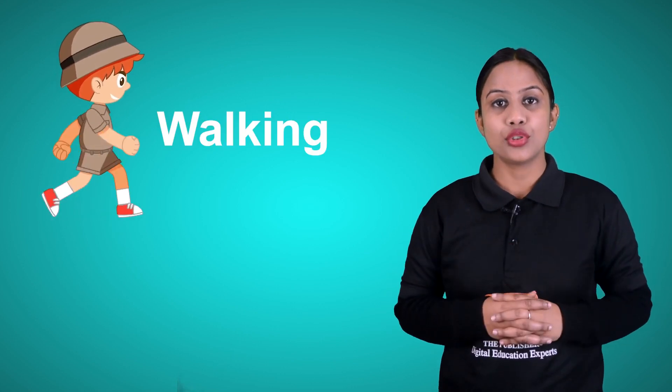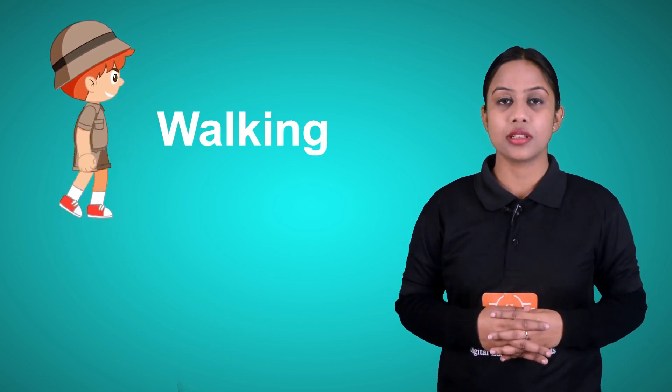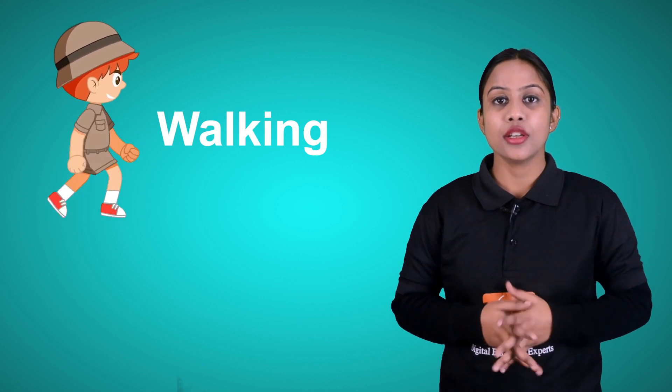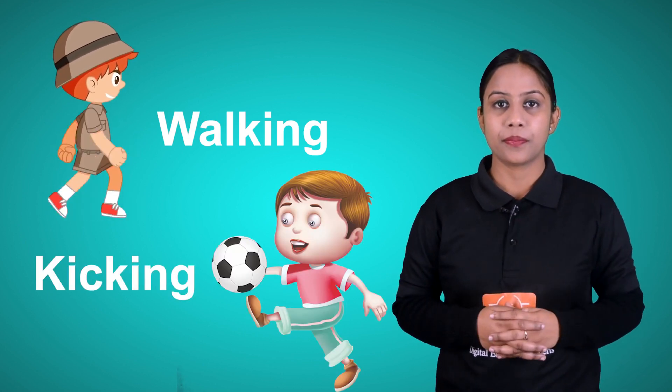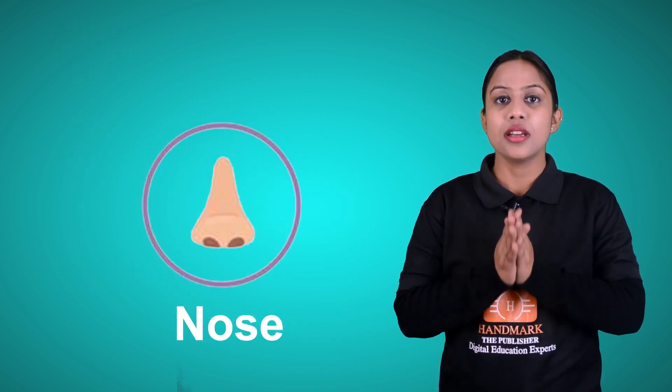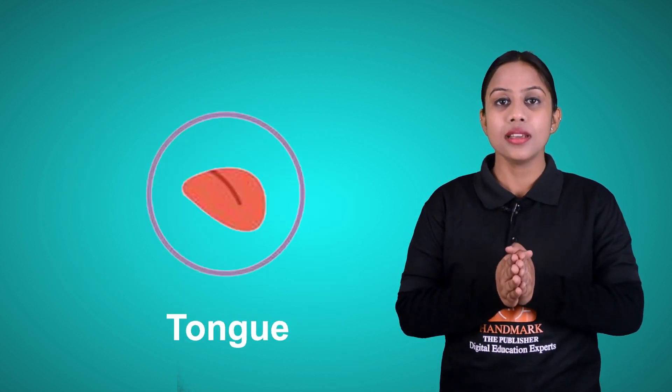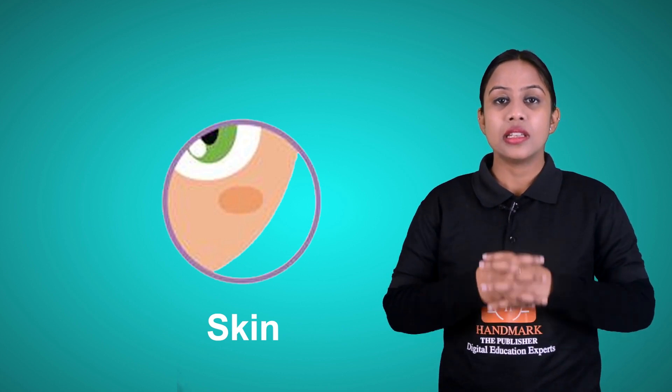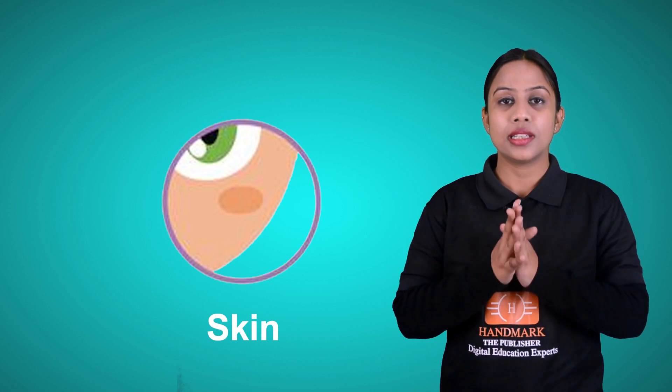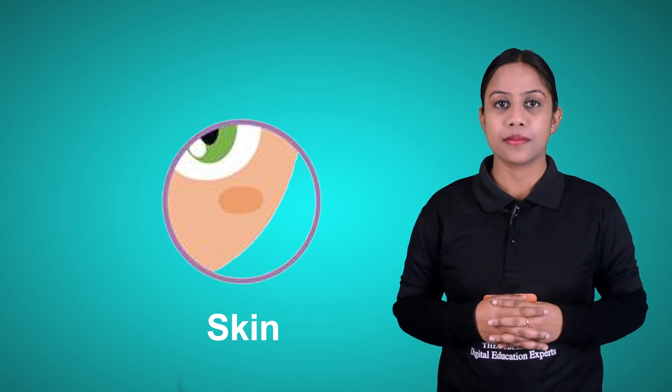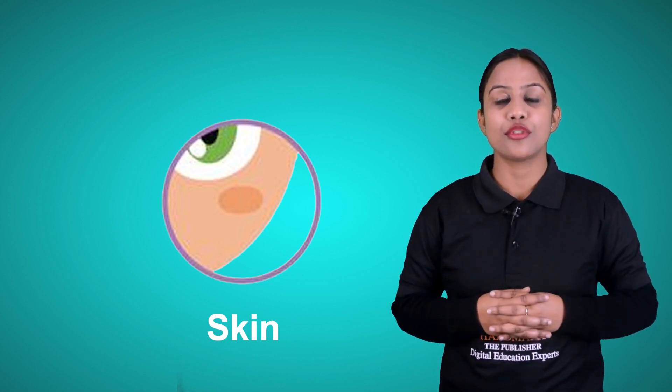We have two legs and two feet. We use our legs for walking, for kicking, etc. Eyes, ears, nose, tongue, and skin - these parts of our body help us to know the things around us and these parts of our body are known as sense organs.